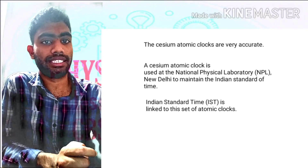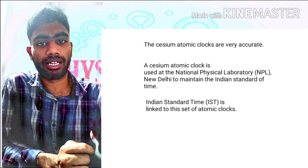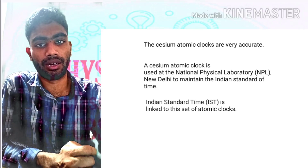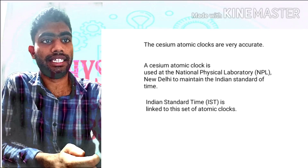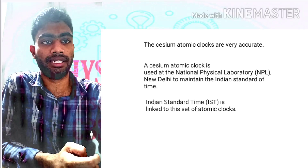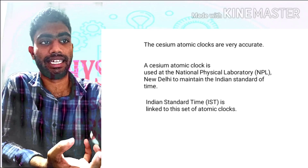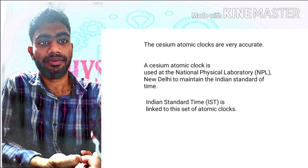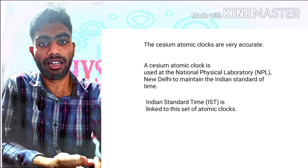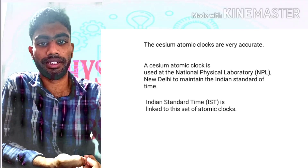The cesium atomic clock is very accurate, which is why we use that concept in our normal clocks. The cesium atomic clock is now present at the National Physics Laboratory in New Delhi. It maintains what we call the Indian Standard Time, which is linked to the cesium atomic clock, and according to that our time is governed.